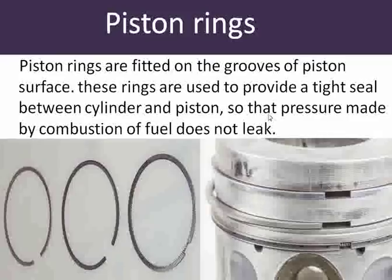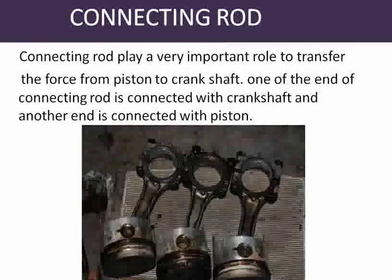The piston rings are used so that the pressure made by the combustion of fuel does not leak. When the spark plug gives combustion in the cylinder, the rings are used to prevent the leakage of pressure which is developed in the cylinder.